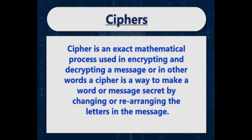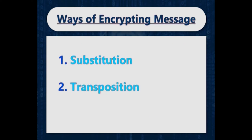A cipher is an exact mathematical process used in encrypting and decrypting a message. In other words, a cipher is a way to make a word or message secret by changing or rearranging the letters in the message. There are two ways of encrypting a message: either through substitution or through transposition.